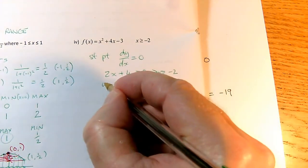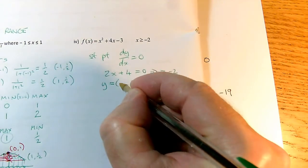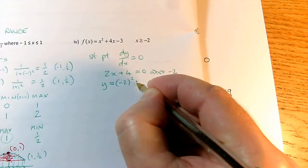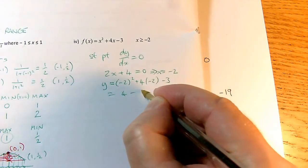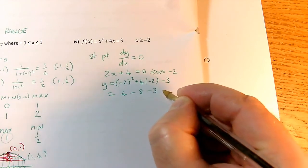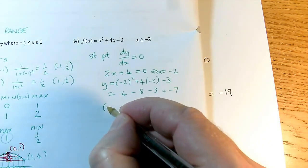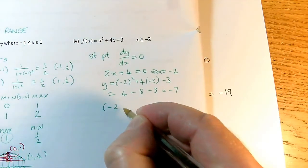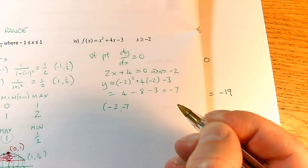So what will my y-coordinate of my stationary point be? Well, put minus 2 into this. I'm going to get minus 2 squared plus 4 times minus 2 minus 3 is 4 minus 8 minus 3, which is minus 7. So I'm going to have a minimum value at minus 2, minus 7.